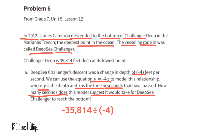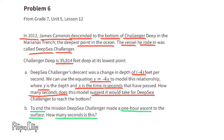Using the given information: negative 35,814 divided by negative 4 — negative 4 represents descending feet per second, and negative 35,814 represents the total feet to descend. The model suggests 8,953.5 seconds for Deep Sea Challenger to reach the bottom.